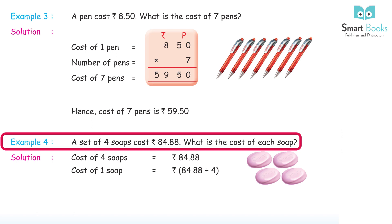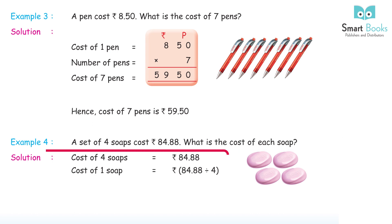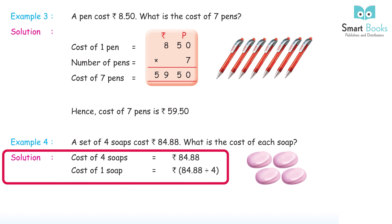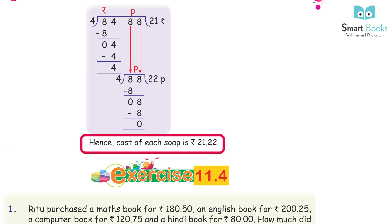Example 4: a set of 4 soaps costs Rs. 84.88. What is the cost of each soap? Cost of 4 soaps = Rs. 84.88. Cost of one soap = Rs. 84.88 ÷ 4 = Rs. 21.22.